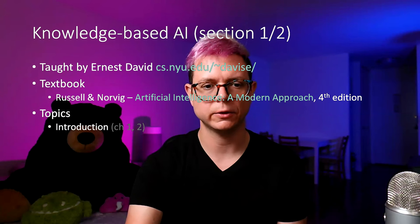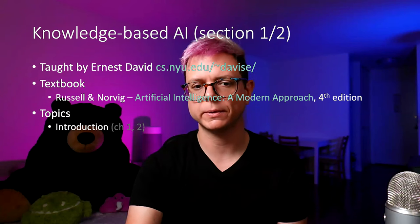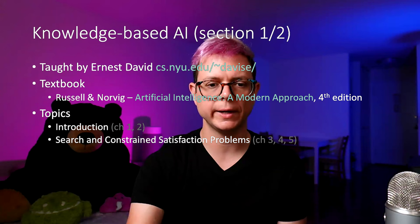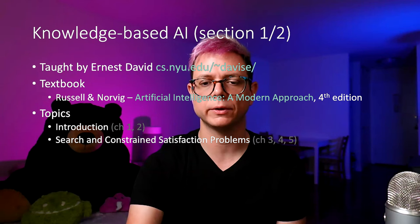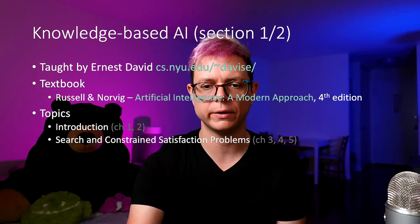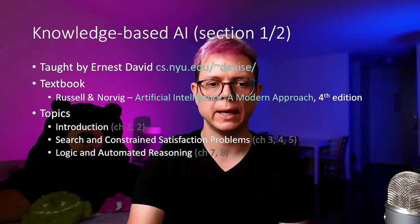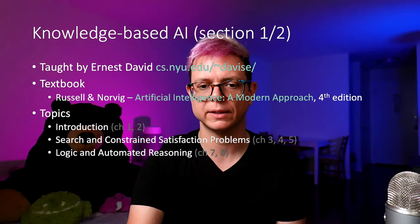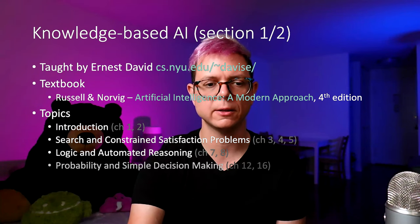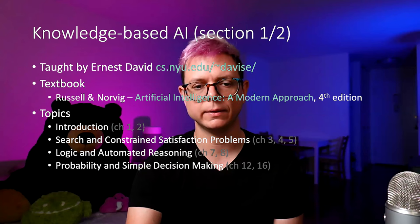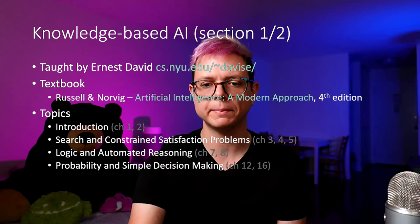The topics of the first part include Introduction, chapters 1 and 2; Search and Constraint Satisfaction Problems, chapters 3, 4, and 5. Then we cover Logic and Automated Reasoning, chapters 7 and 8. And finally, Probability and Simple Decision Making, which are chapters 12 and 16.